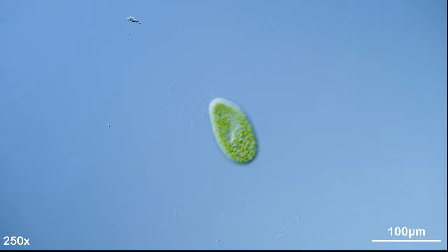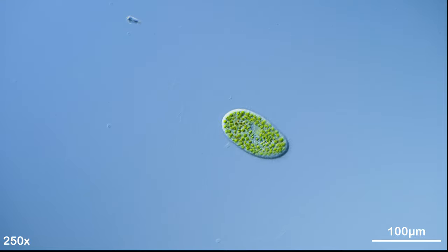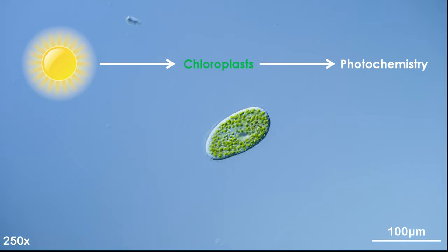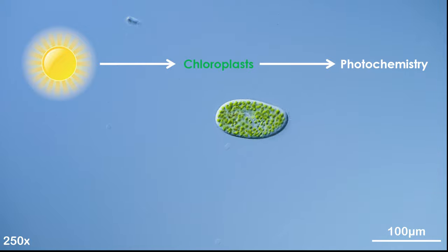Paramecium caudatum is the only paramecium species that has a symbiotic relationship with green algae from the genus Zoochlorella. While paramecium provides a protective environment, the algae inside its cytosol use light energy to produce carbohydrates by photosynthesis, which make paramecia less dependent on other food sources.